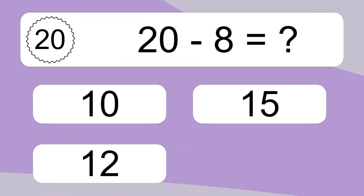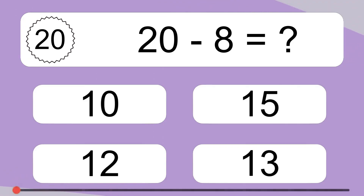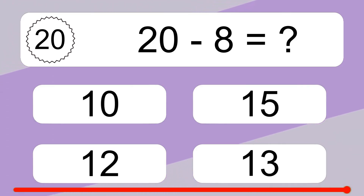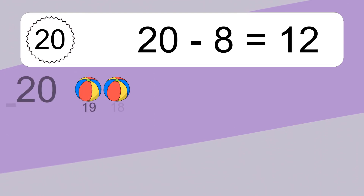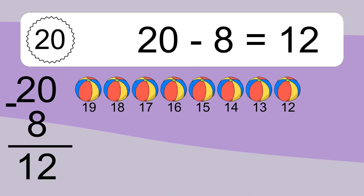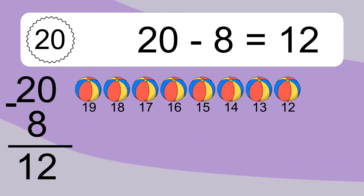20 minus 8 equals what? 20 minus 8 equals 12. Let's count it. 19, 18, 17, 16, 15, 14, 13, 12.